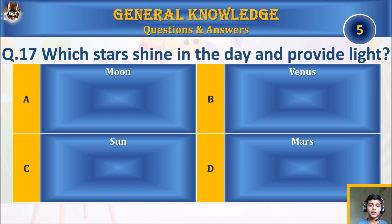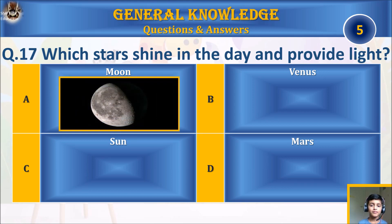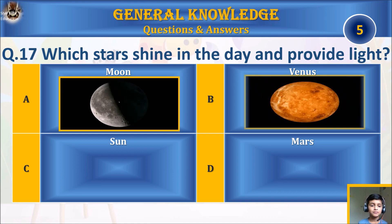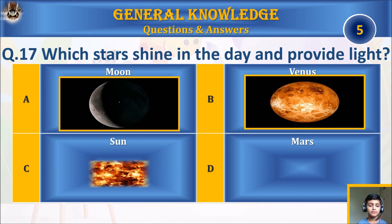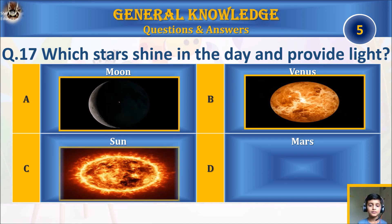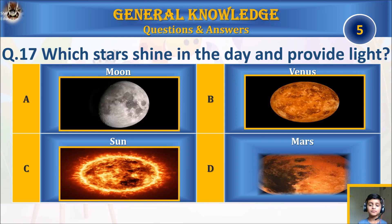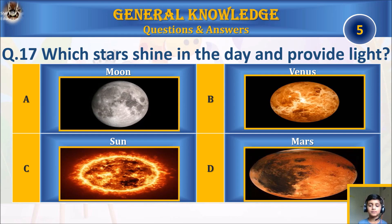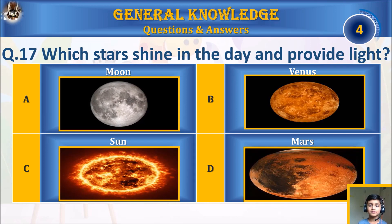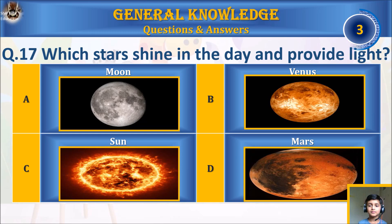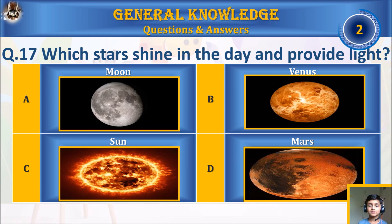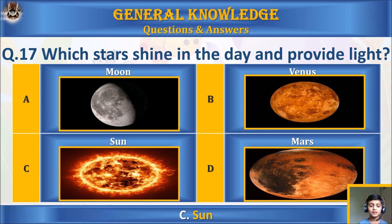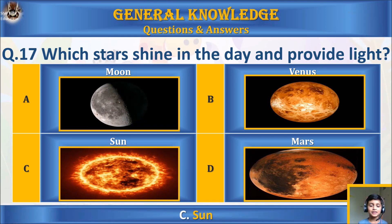Question seventeen: which star shines in the day and provides light? A) moon, B) Venus, C) Sun, or D) Mars? Your time starts. The answer is C) Sun.